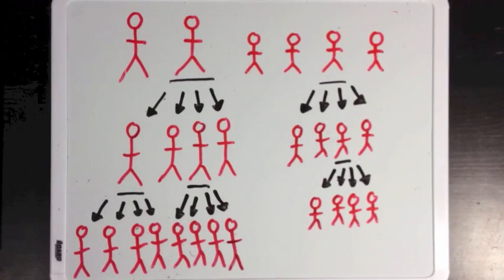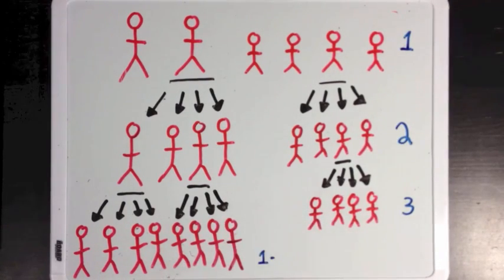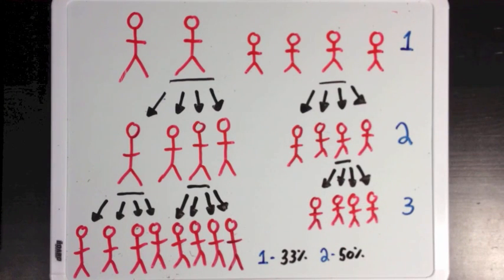Now if we number our generations, generations one, two, and three, we can see that in generation one, 33% of the population was long-legged. In generation two, 50% of the population was long-legged. And by generation three, 67% of our population was long-legged.